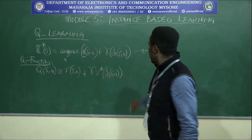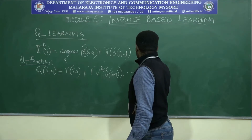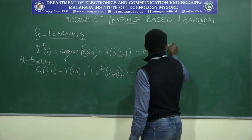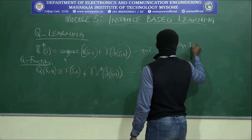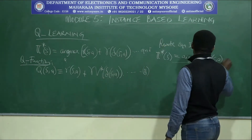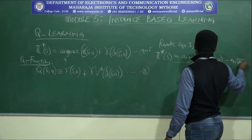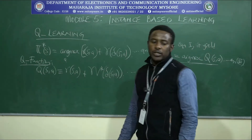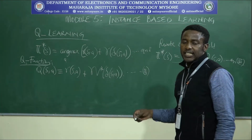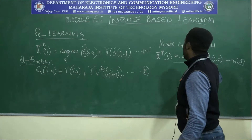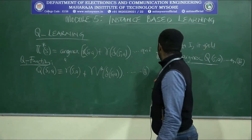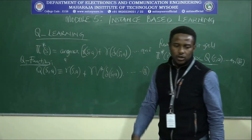If we now rewrite equation 1 above, that yields equation 3. It is obviously clear that we only need to consider each available action in a particular state, and this action maximizes the Q-function. So that is the role of argmax there.